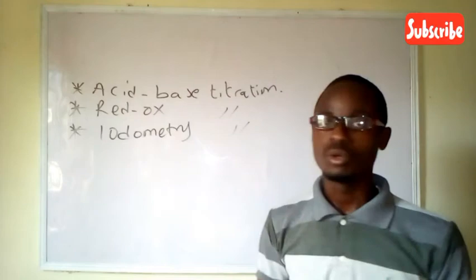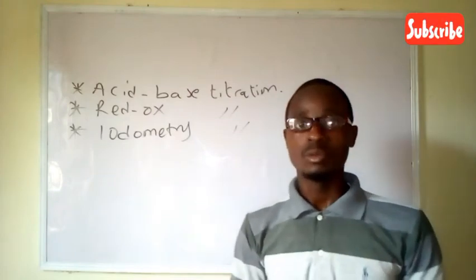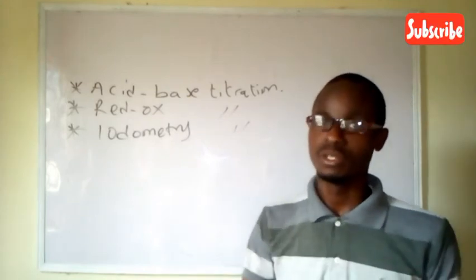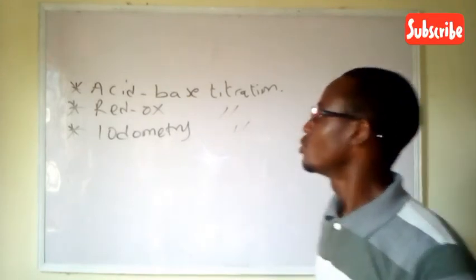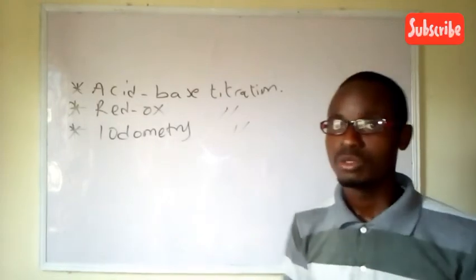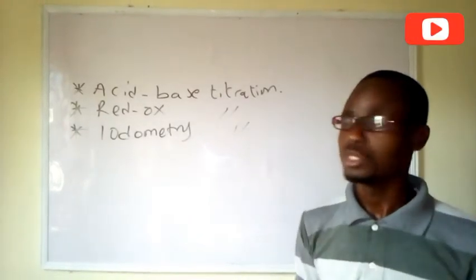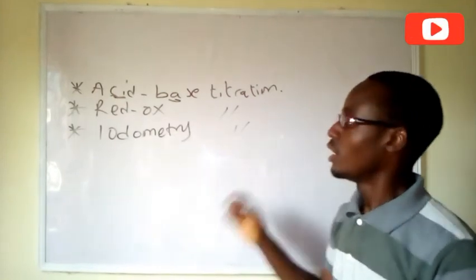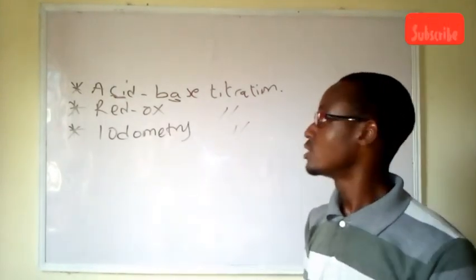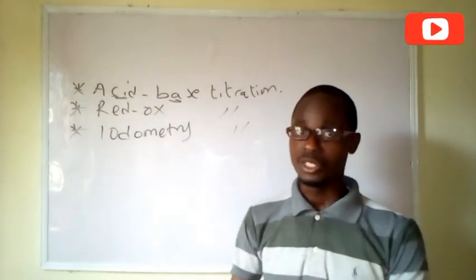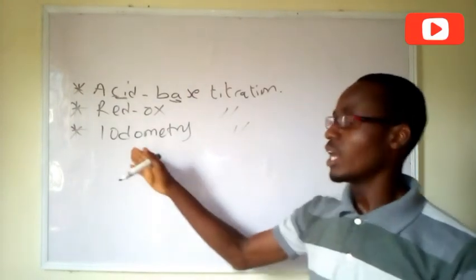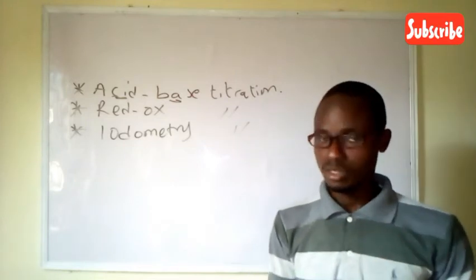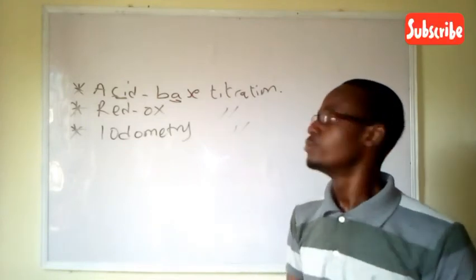For some examination bodies in West Africa, we have these three types of titration that are mostly given as questions. Starting with acid-base titration, that involves the titration between acid and the base. Redox titration has to do with the titration between an oxidizing agent and a reducing agent. Then we have iodometry, which has to do with the titration of iodine with some reagent.